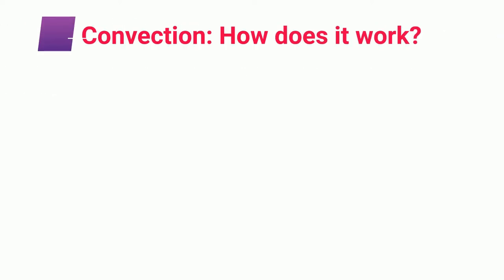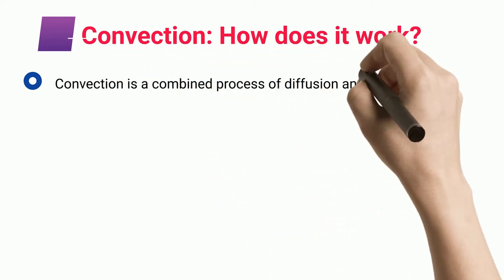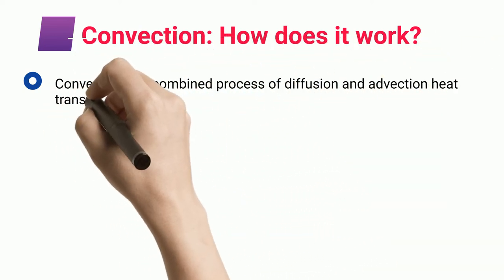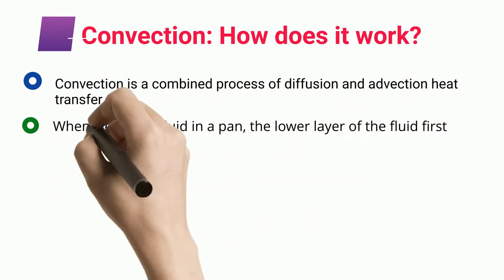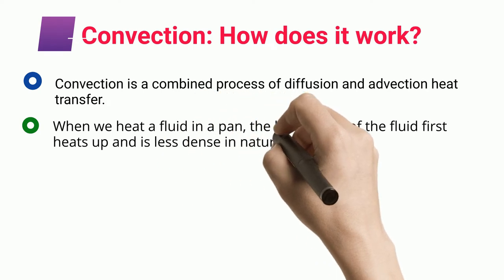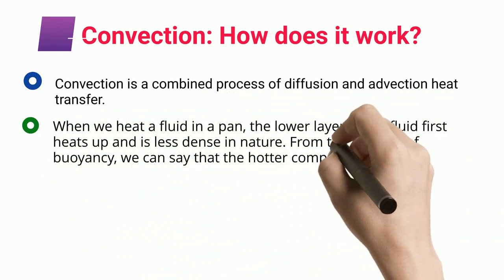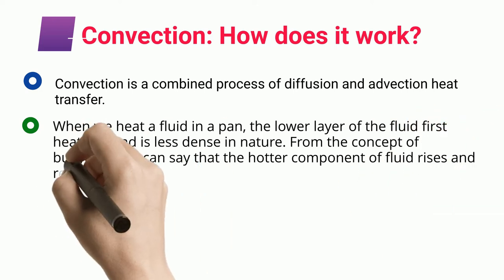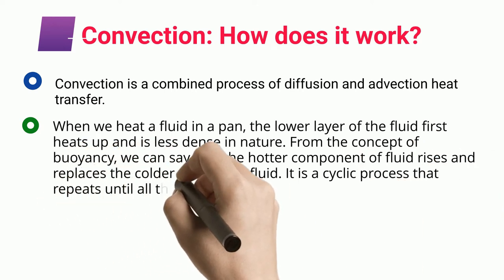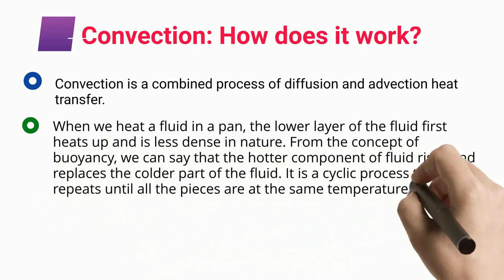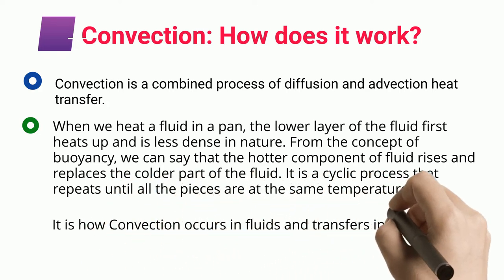Convection — How does it work? Convection is a combined process of diffusion and advection heat transfer. When we heat a fluid in a pan, the lower layer of the fluid first heats up and becomes less dense in nature. From the concept of buoyancy, we can say that the hotter component of fluid rises and replaces the colder part. It is a cyclic process that repeats until all parts are at the same temperature. This is how convection occurs in fluids, transferring heat in a vertical direction.